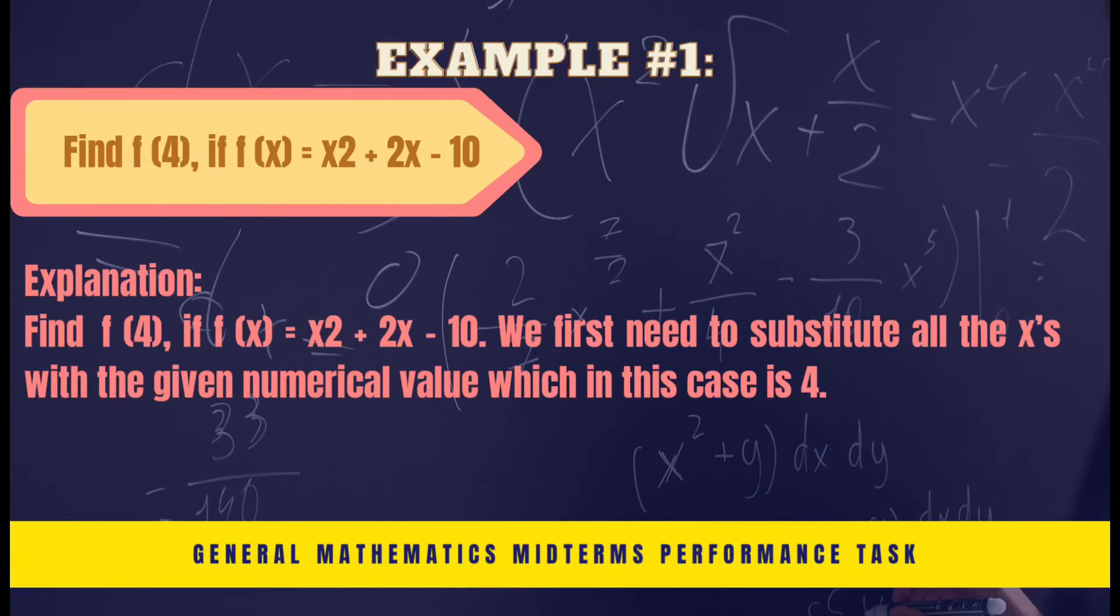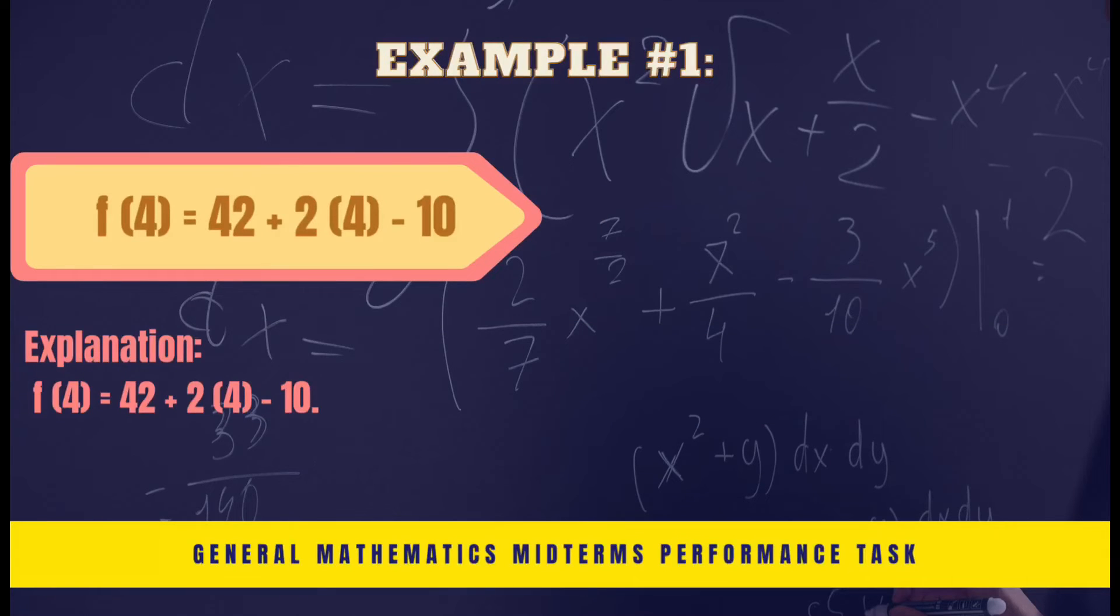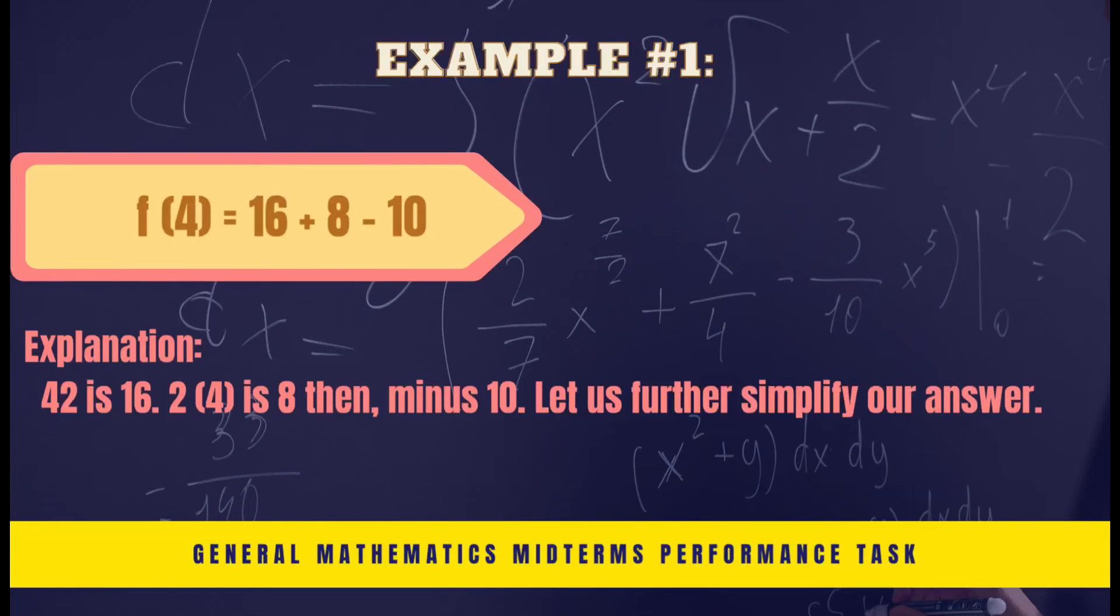Find f of 4 if f(x) is equal to x squared plus 2x minus 10. We first need to substitute all the x's with the given numerical value, which in this case is 4. f(4) equals 4 squared plus 2 times 4 minus 10. 4 squared is 16, 2 multiplied by 4 is 8.